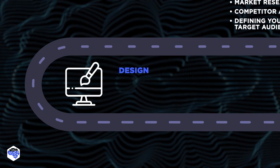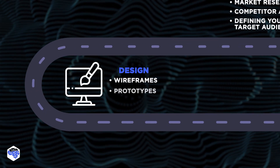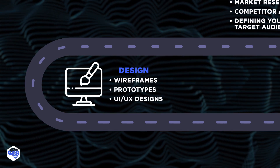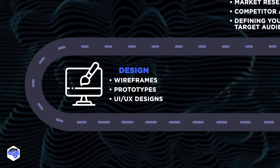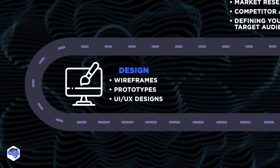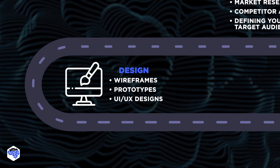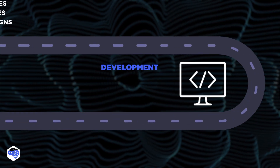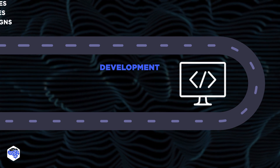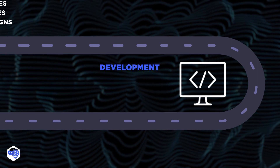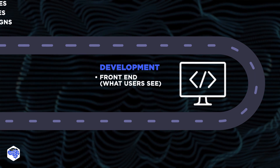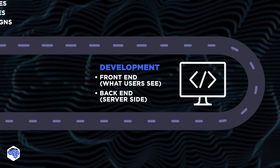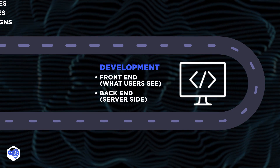Second, design: here you'll need wireframes, prototypes, and UI/UX designs to map your user journey and interface. The end goal at this stage is a design that is aesthetically pleasing but also user-friendly and intuitive. Third, of course, is development: this is where your dream starts becoming a reality. You'll need to develop the front end — what users see — and the back end, the server side of your application. You'll move from this stage with a working application.